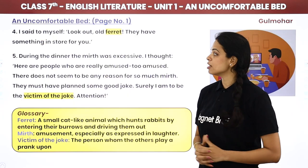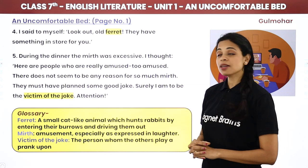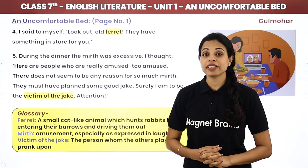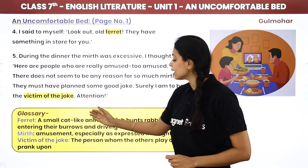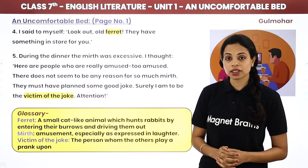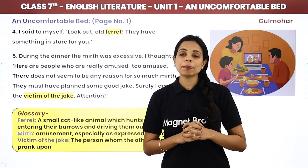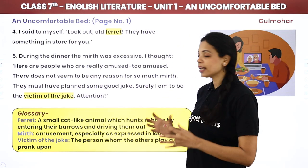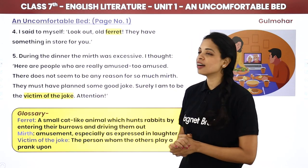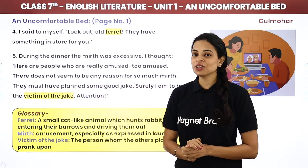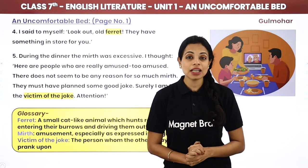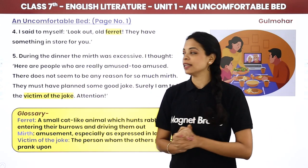I said to myself, 'Look out, old ferret — they have something in store for you.' A ferret is a small cat-like animal which hunts rabbits by entering their burrows and driving them out. So here he is comparing himself to a cornered animal, telling himself to be careful — these people definitely have something planned for him. 'They have something in store for you' means they are scheming something.